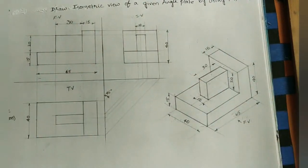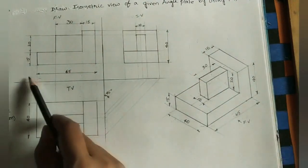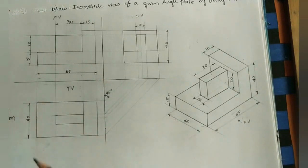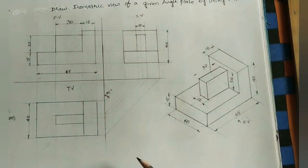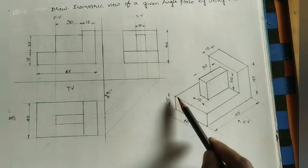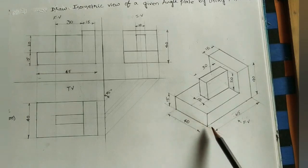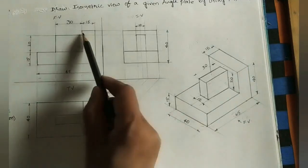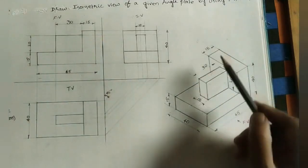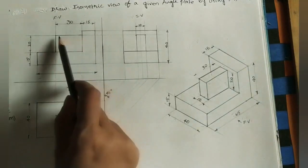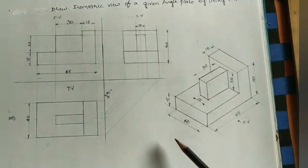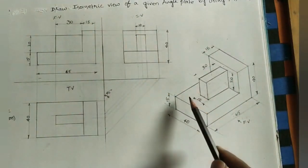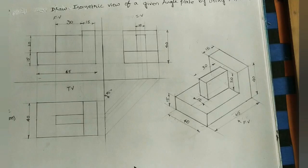Here, mark the given dimensions. This width is 65 mm and this width is 40 mm. This thickness is 15 mm. All dimension lines should be parallel to the main line — here also the dimensional line is parallel to the main line. This thickness is 15 mm. Then this is 30 mm for this box, and this height is 20 mm. This thickness is 10 mm. In this way, we have to mark the dimensions and cover all the dimensions in the isometric view.